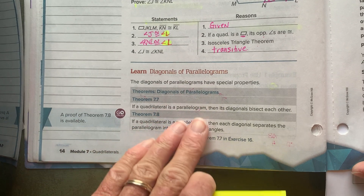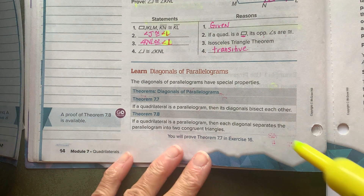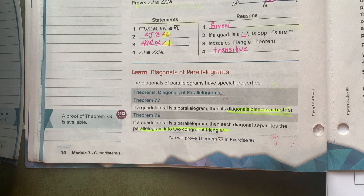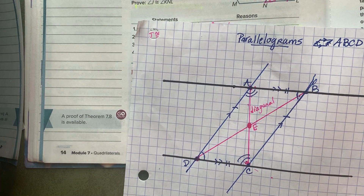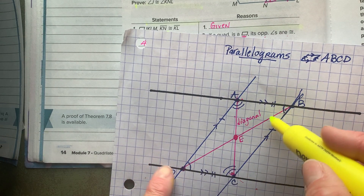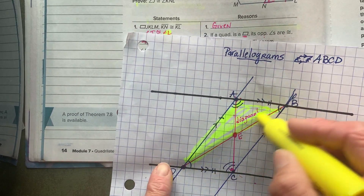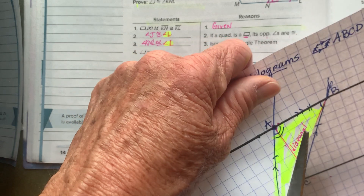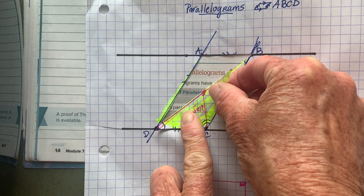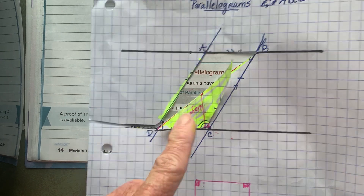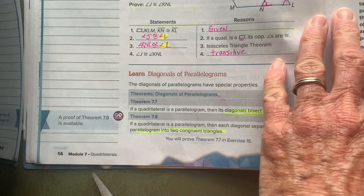The diagonals of a parallelogram bisect each other, and another thing the diagonals do is separate the parallelogram into two congruent triangles. I have a pair of scissors — let me do that really quick. Looking at diagonal DAB, there's the top triangle and the bottom triangle. Let me quickly cut out the top triangle. I can take that triangle and place it there, and you can see those are congruent to one another. That would be true along either diagonal for any parallelogram — it splits the quadrilateral into congruent triangles.